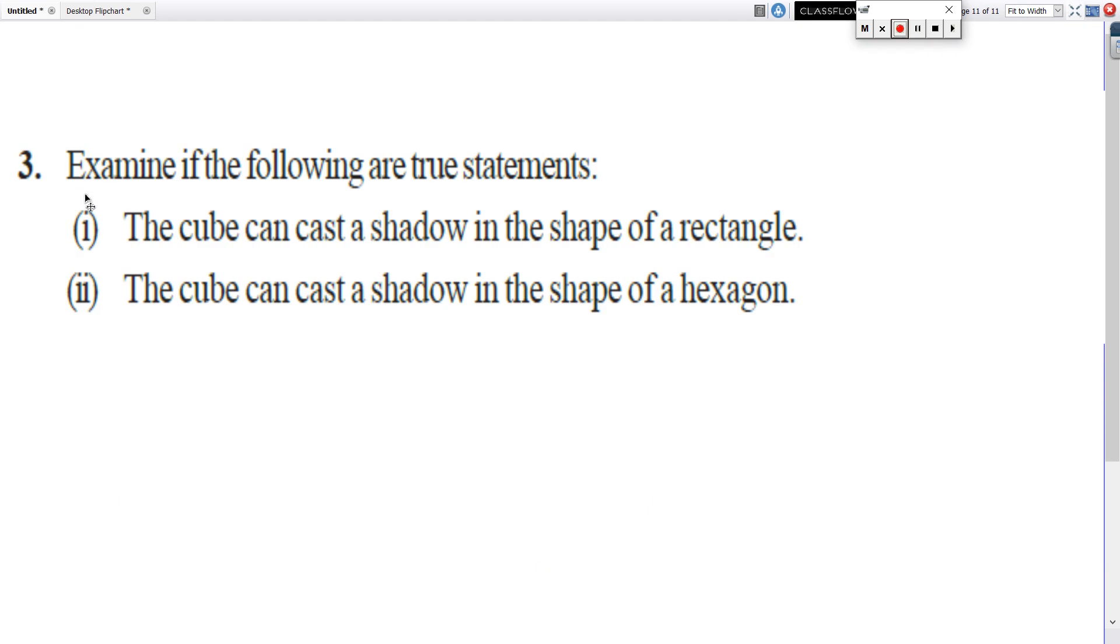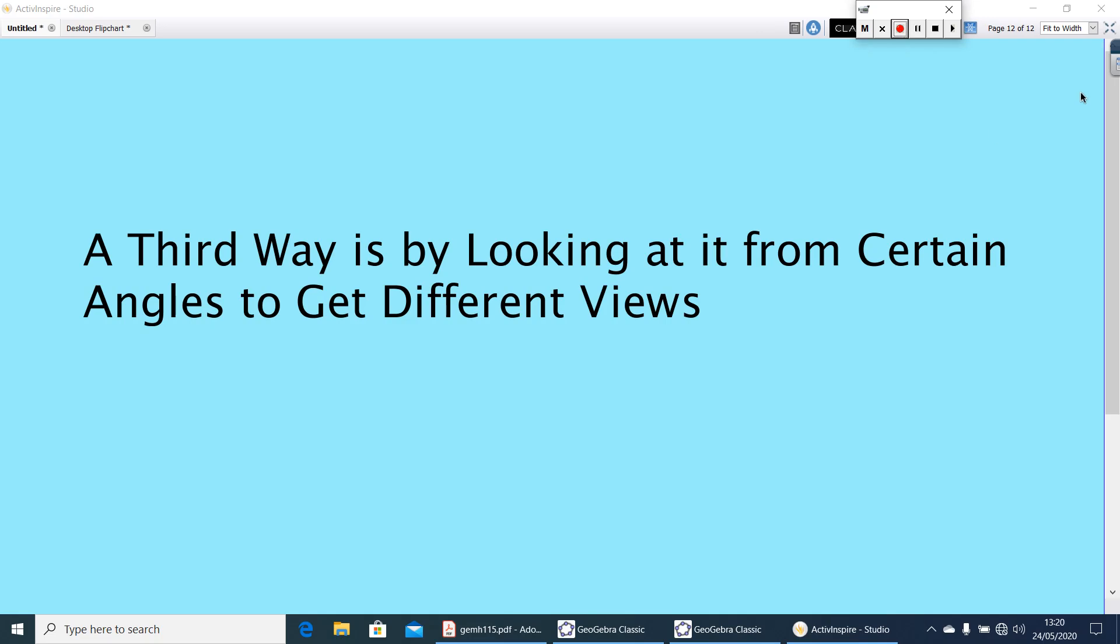Here is the third question. Examine if the following are true statements. True or false, you have to write. The cube can cast a shadow in the shape of a rectangle. Do check it. Make a cube. Do put a light on back, top or side. Will you get a rectangle or not? Do check it. Similarly, the cube can cast a shadow in the shape of a hexagon. Hexagon is a polygon of side 6. You do check it, whether you can get it or not.